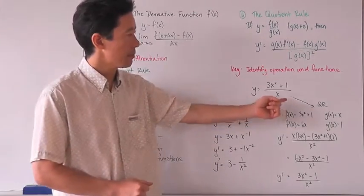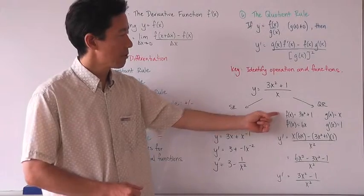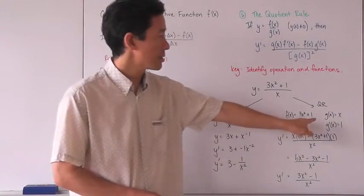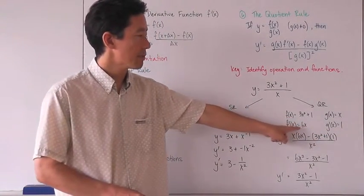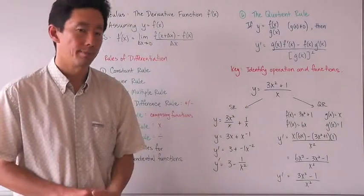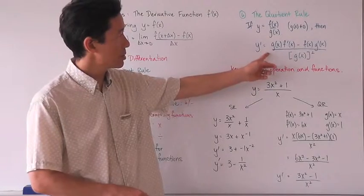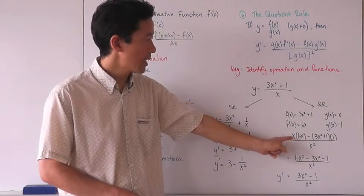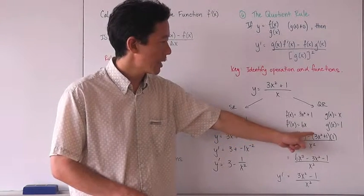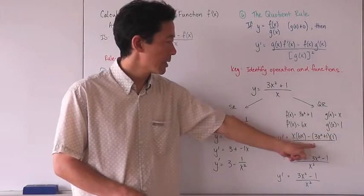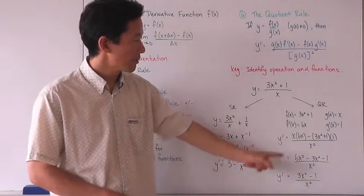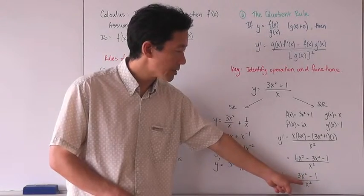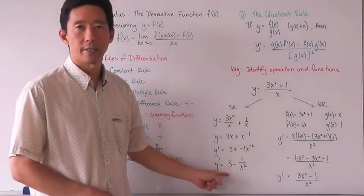In the same respect, we can still look at this as a quotient of two functions, where f of x is equal to 3x squared plus 1 and g of x is equal to x. Using simple rules of differentiation, f prime of x is equal to 6x and g prime of x is equal to 1. Then using the quotient rule, y prime equals g of x times f prime of x minus f of x times g prime of x, divided by g of x quantity squared. Distributing and simplifying, we get 3x squared minus 1 all over x squared, which is exactly the same as the previous expression.